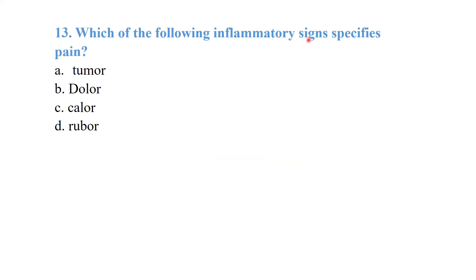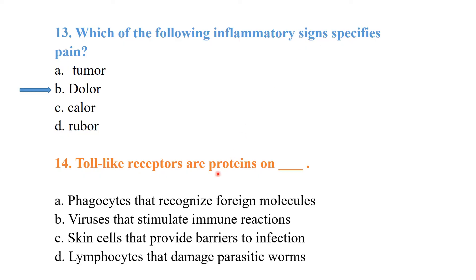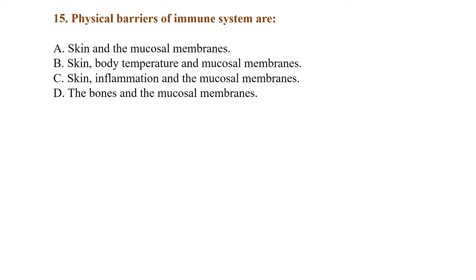Among the signs of inflammation, the specific sign of pain is 'dolor.' Toll-like receptors are proteins on phagocytes that recognize foreign molecules.